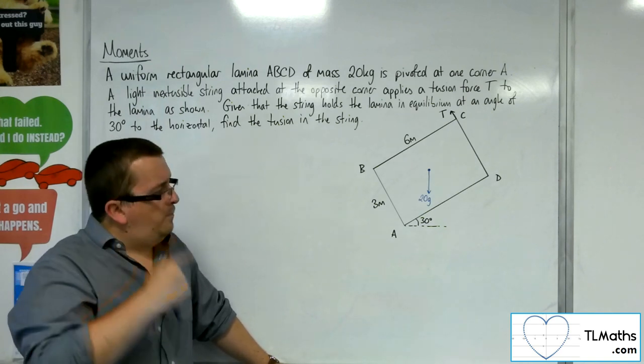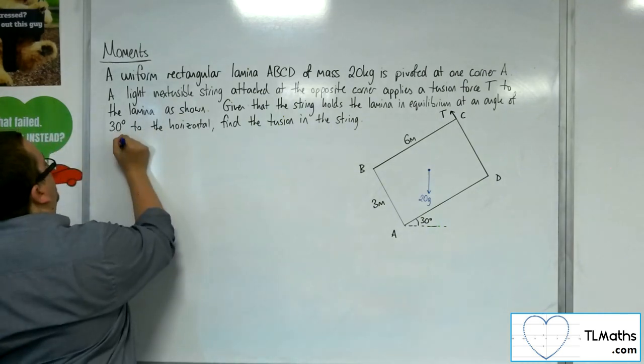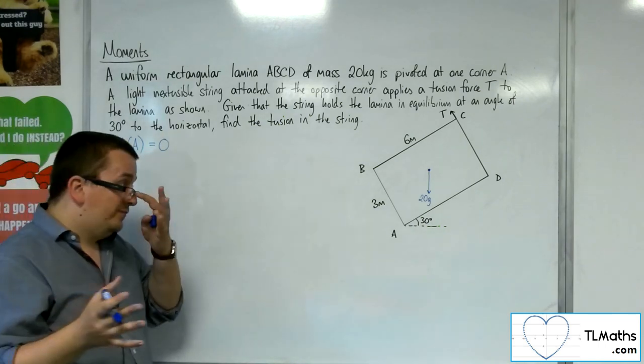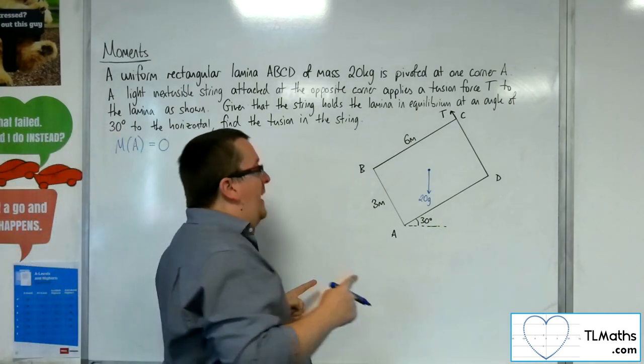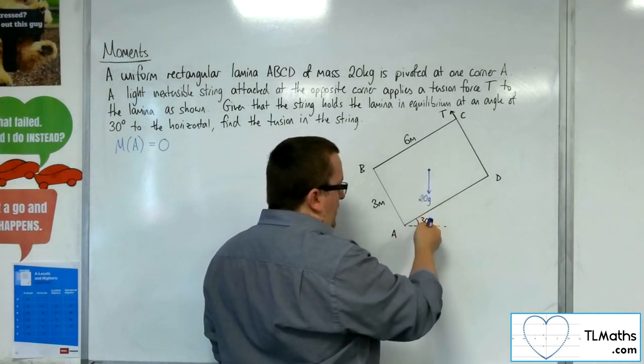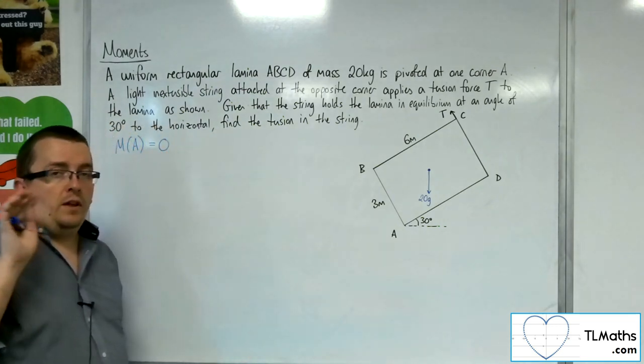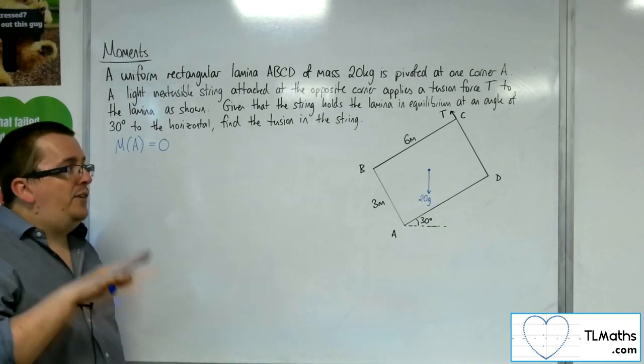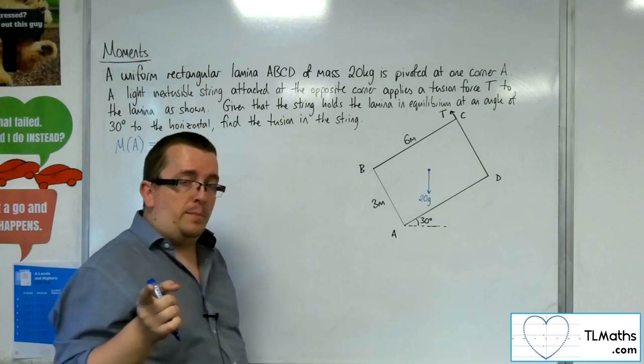Now, the problem here is that what I'm going to do is I'm going to want to take moments about A, and I know the total moment is going to be zero. The problem is trying to find the distance between A and that force. Now, obviously it can be done, but it is easier to deal with everything if you look at this parallel and perpendicular to the plane.